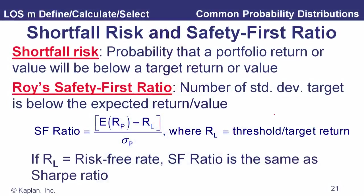Roy's safety first ratio is the number of standard deviations that this target return — sometimes called the threshold return — is below the expected return or the expected value. It's calculated as the expected return on the portfolio minus this target or threshold return, divided by the standard deviation of portfolio returns. That is simply the number of standard deviations below the expected value.